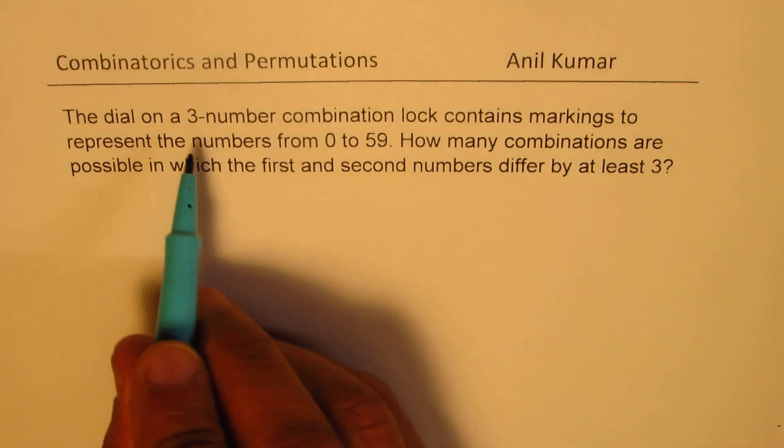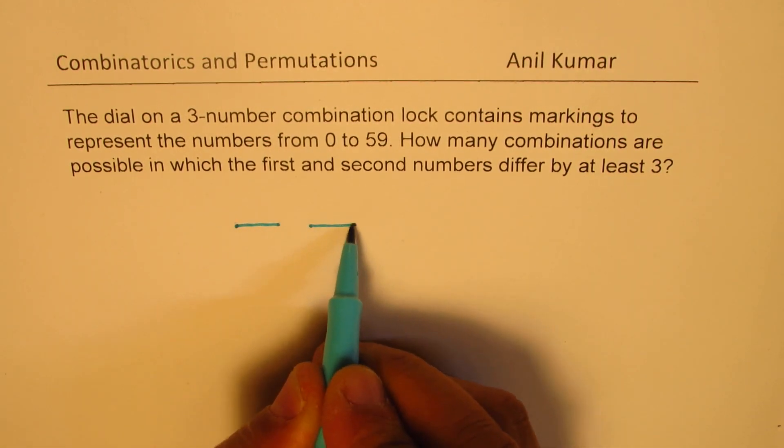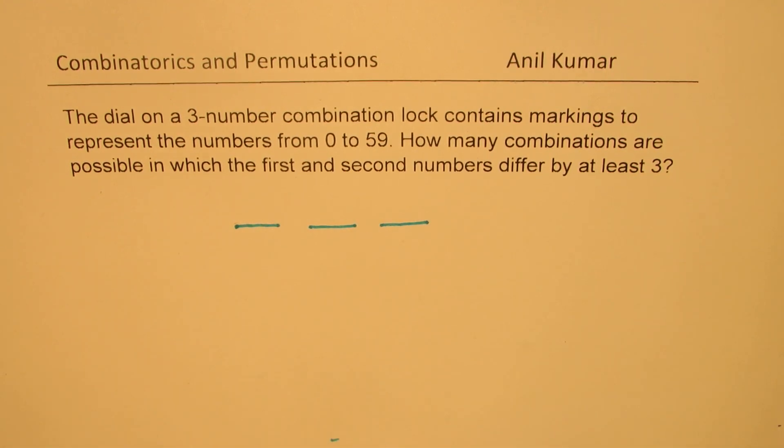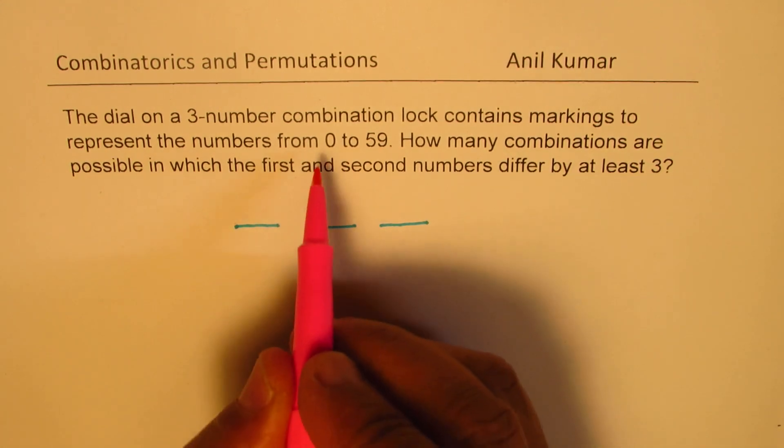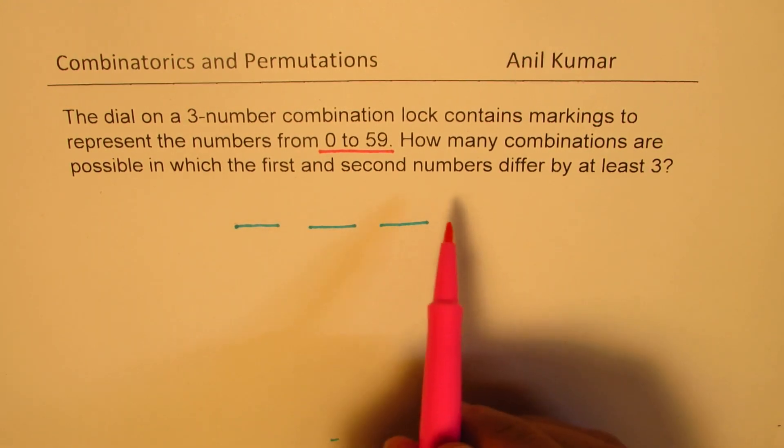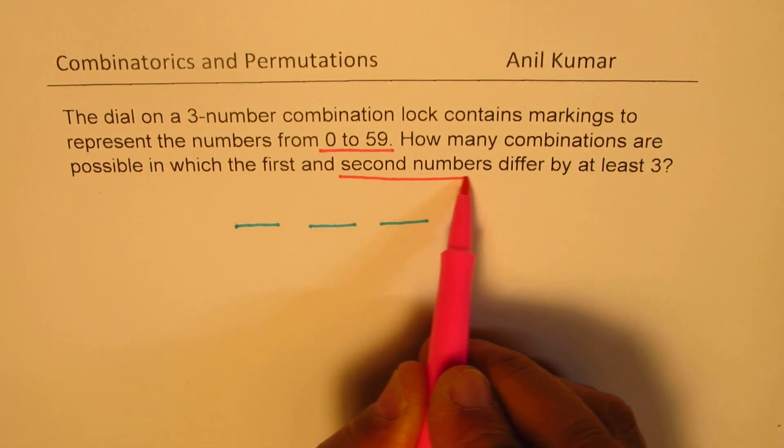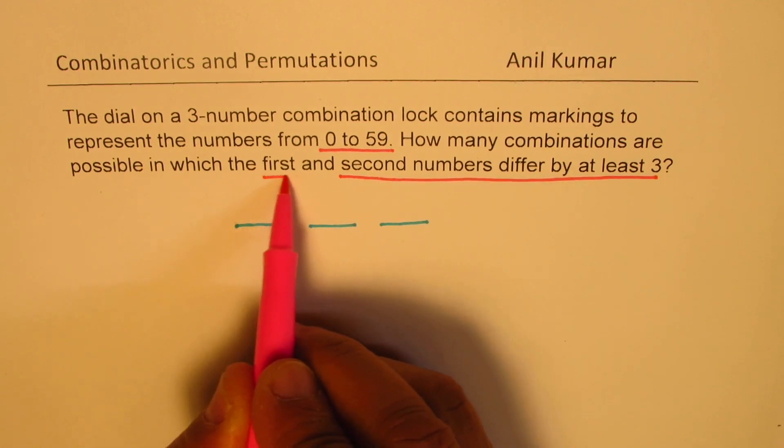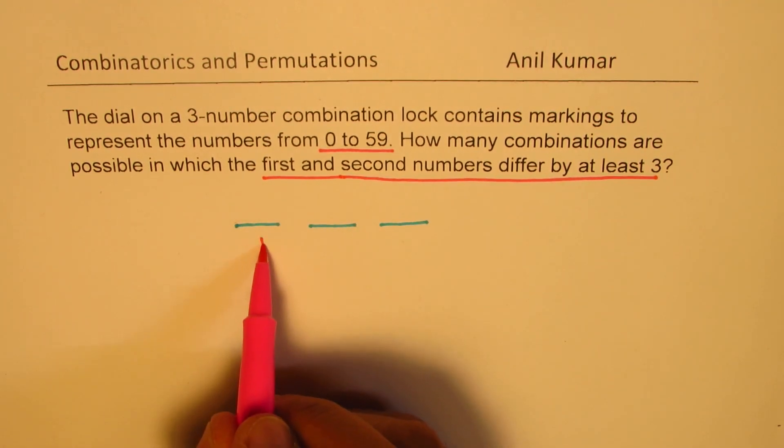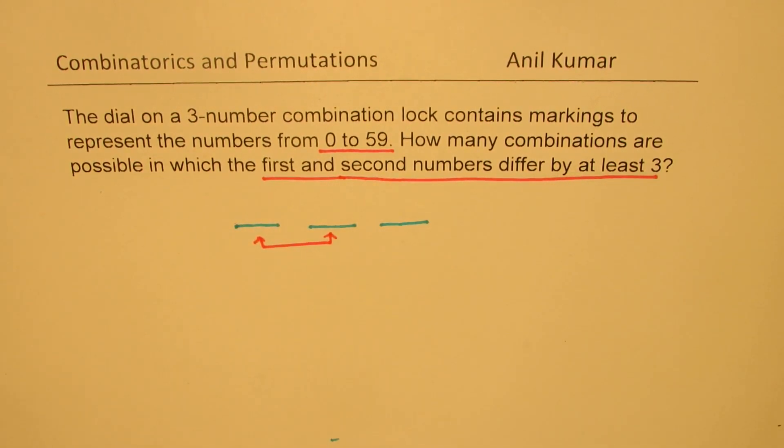So let's begin with the three numbered combination lock. Let's say these are the positions for the three numbers. We are given one restriction here and the restriction is that we have to use numbers from 0 to 59.